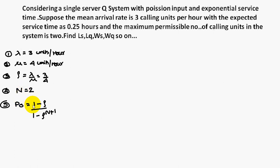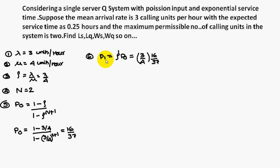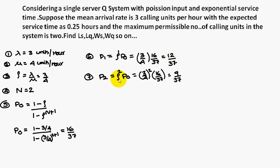P(0) equals (1 minus rho) divided by (1 minus rho to the power N+1), with N equal to 2 and rho equal to 3/4. Substituting and simplifying gives P(0) equal to 16/37. Similarly, P(1) equals rho to the power 1 into P(0), which is (3/4) times (16/37), giving 12/37. P(2) equals rho squared into P(0), that is (3/4) squared times (16/37), giving 9/37. Checking: P(0) plus P(1) plus P(2) equals 1, so the values are correct.